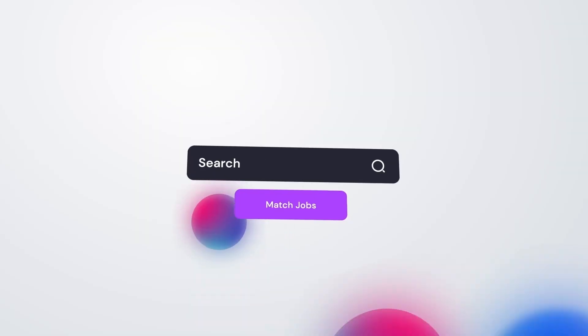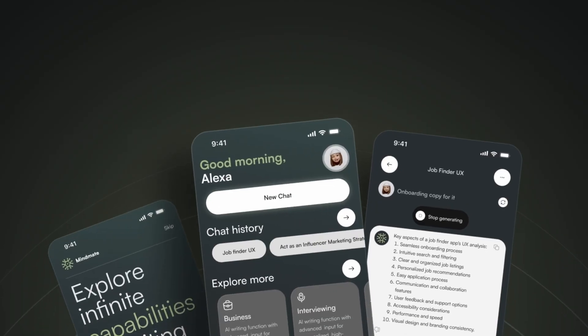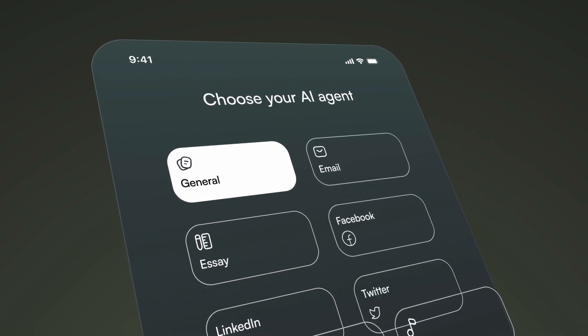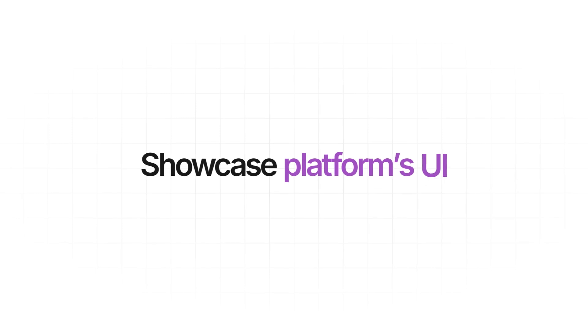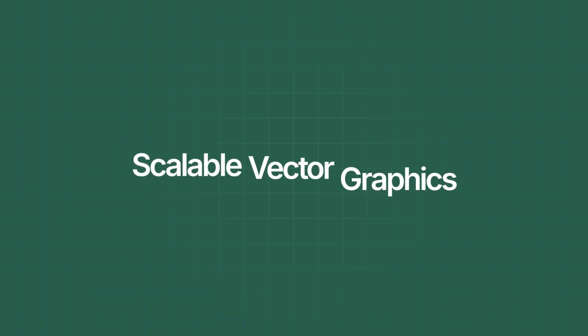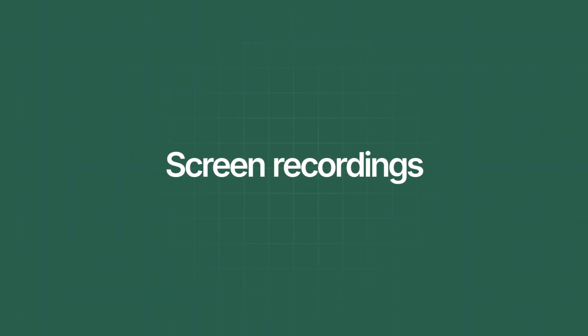After creating many SaaS product demo videos, I noticed a common point of confusion with new clients, and that is choosing the right style to showcase their platform's UI — scalable vector graphics or pixel-based screen recordings. If that sounds foreign to you, don't worry. I'm going to break them down in simple terms so by the end of the video, you'll feel confident selecting the right method for your demo.